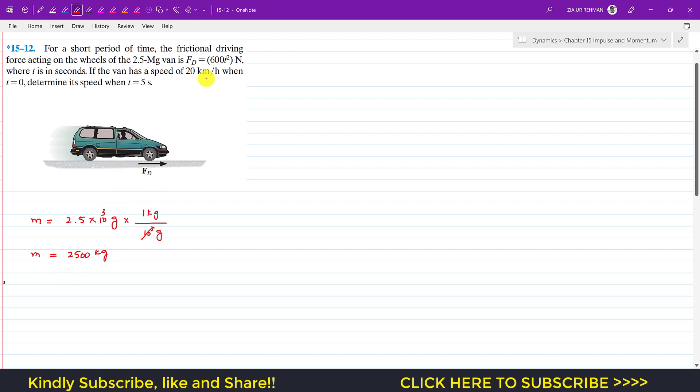Now it is said that the car has an initial velocity of 20 km/h. So initially when t equals 0, the velocity v₁ is 20 km/h. Let's convert this velocity into meters per second.